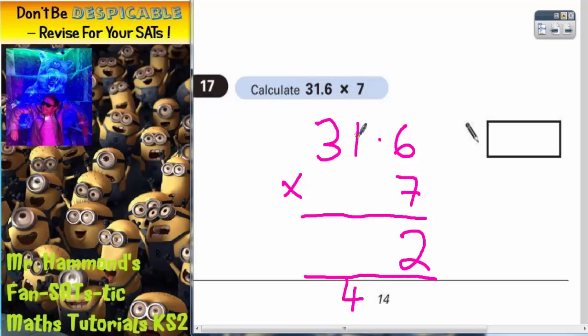7 times by 1 is 7. 7 plus that 4 is 11. Put your 1 in, carry your 1.